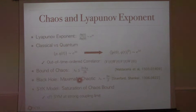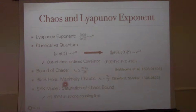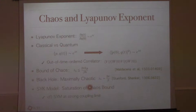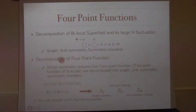Black holes are supposed to saturate the chaos bound with Lyapunov exponent 2pi/beta. The SYK model became so popular because it saturates this chaos bound, providing a strong signal that it may be holographically dual to a black hole. Now I will evaluate the Lyapunov exponent in our model.